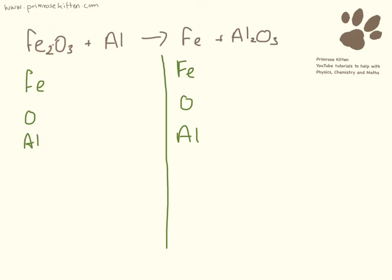So iron here, I've got two of them, so I'm just going to put two. Oxygen, I've got three oxygens. Aluminium, I've just got one. I've got one iron, I've got three oxygens and I've got two aluminiums.